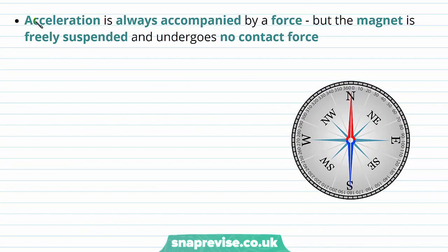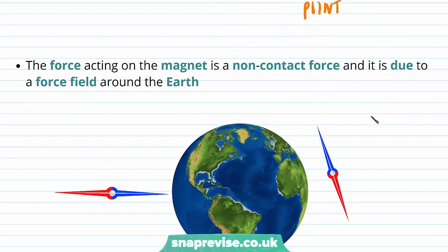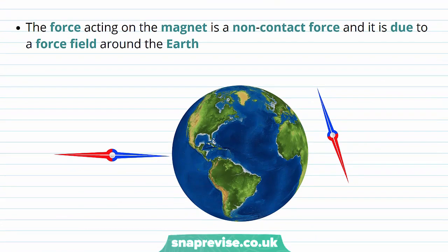We know that acceleration is always accompanied by a force, but the magnet is freely suspended and undergoes no contact force. We know from Newton's second law that force is equal to mass times acceleration. Therefore, if there's an acceleration present, there must be a force. So the magnet is experiencing some kind of force. We need to think carefully about where this force arises from. Because of the magnet's suspension around a fixed point, it undergoes no contact forces. And therefore we know that the force acting on the magnet is a non-contact force, and it's actually due to a force field around the earth.